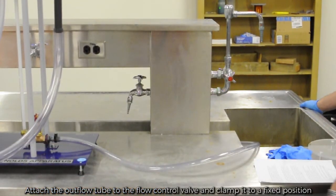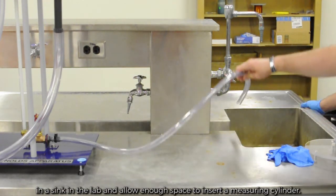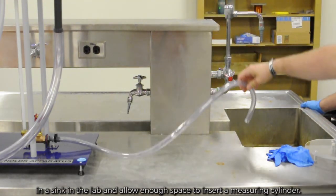Attach the outlet flow tube to the flow control valve and clamp it to a fixed position in a sink in the lab and allow enough space to insert a measuring cylinder.